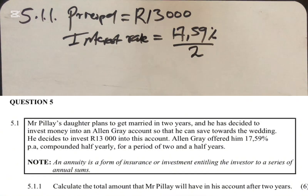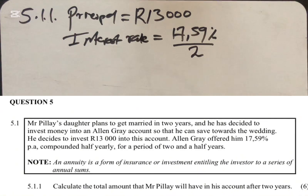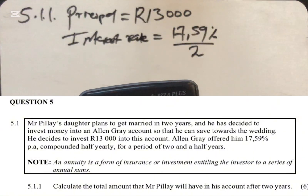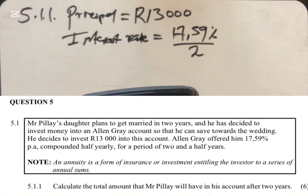This 17.59% is for the whole year, but it is compounded half yearly, so we divide it by two, knowing that he's going to receive this interest twice a year. At the end of the year he's going to receive 17.59% for the whole year, but each and every six months they will offer him a certain percentage. So because they said compounded half yearly, we're going to say 17.59% divided by two.